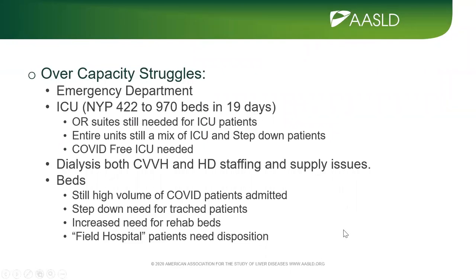We also struggled with dialysis — increased need for CVVH and hemodialysis, along with staffing and supply issues including reagents and filters. We still have a high volume of COVID patients admitted, with patients staying on the vent for many weeks before needing step-down beds. We have needed to funnel patients down from step-down to floor beds to rehab beds. At Columbia, we opened a field hospital to move more stable patients closer to discharge so we could free up ICU capacity.